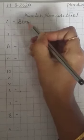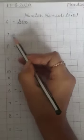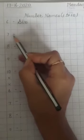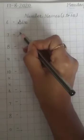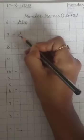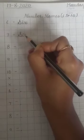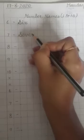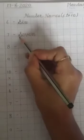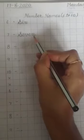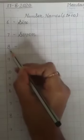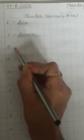Then leave a line, write number 7, put a small dash here, now write capital S, then small E, V, E, N. S-E-V-E-N, seven.